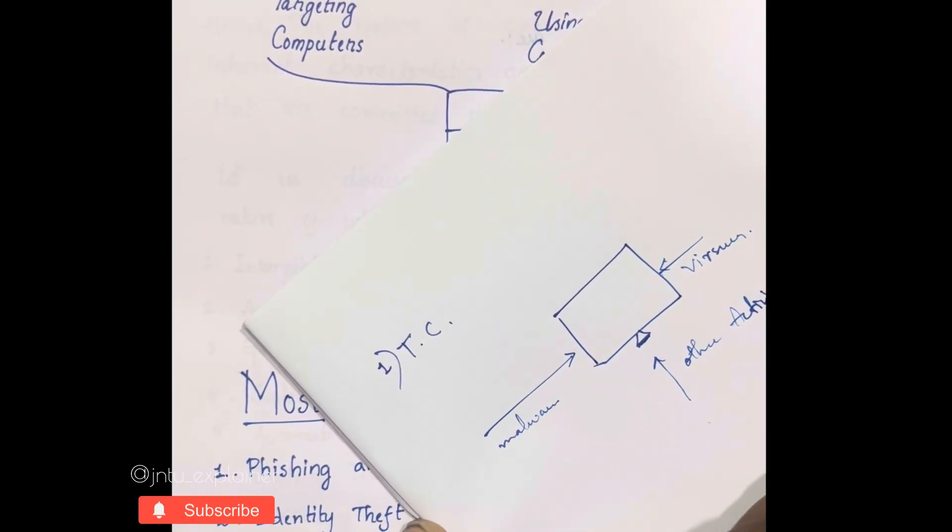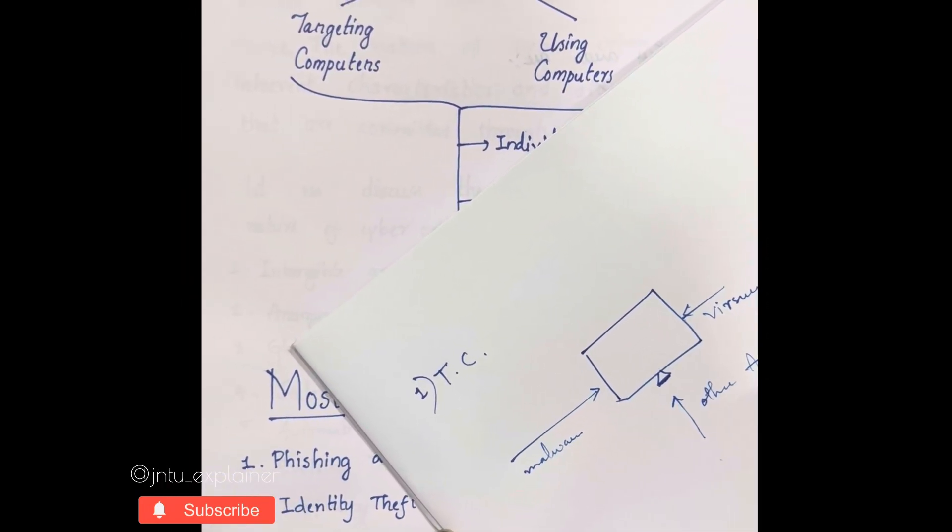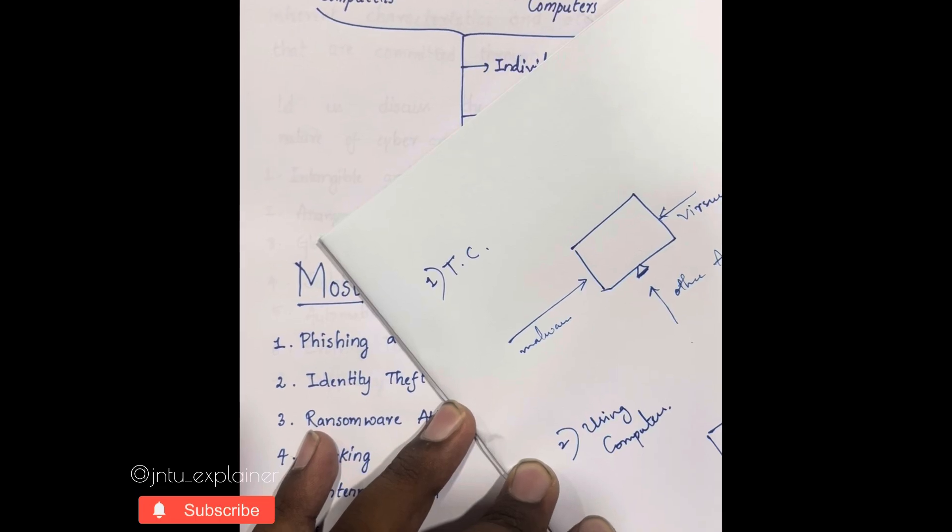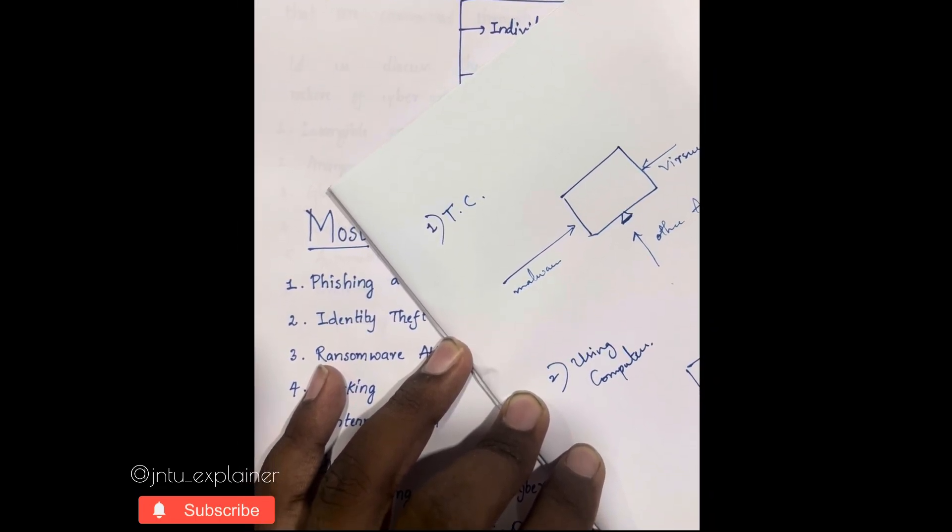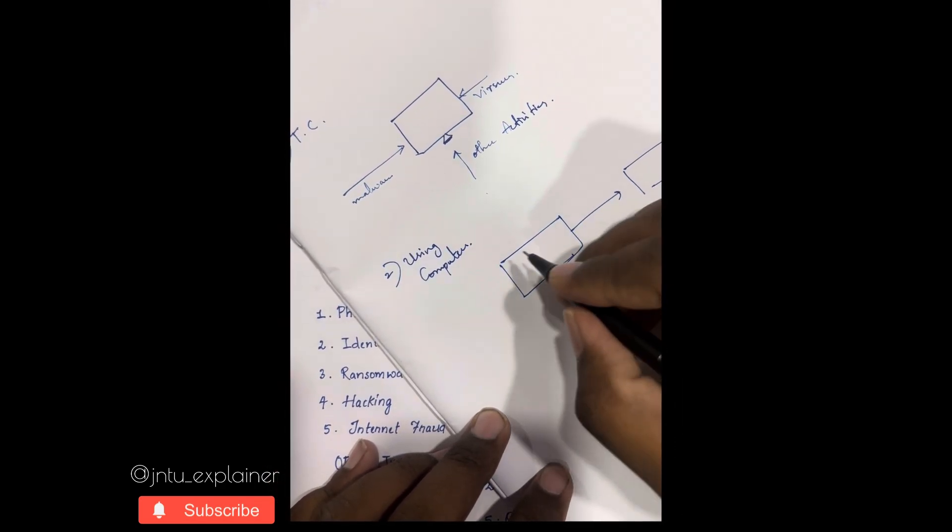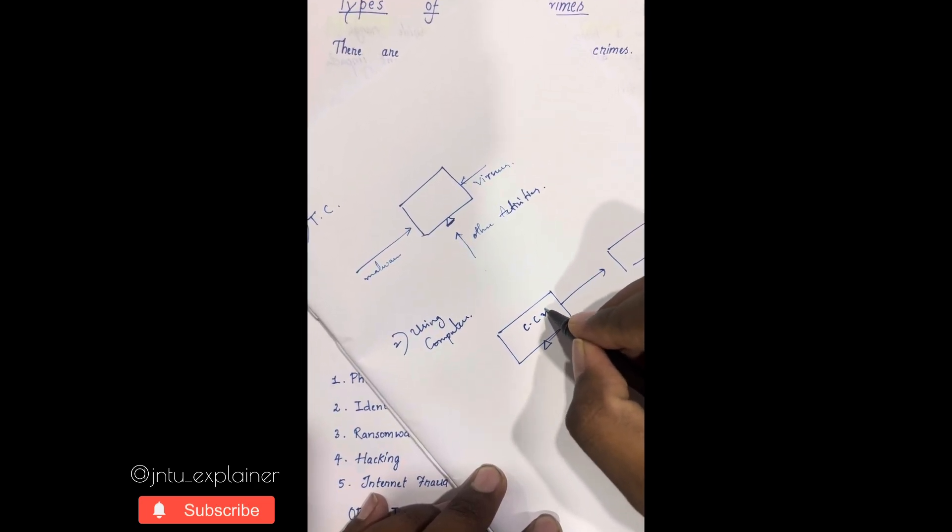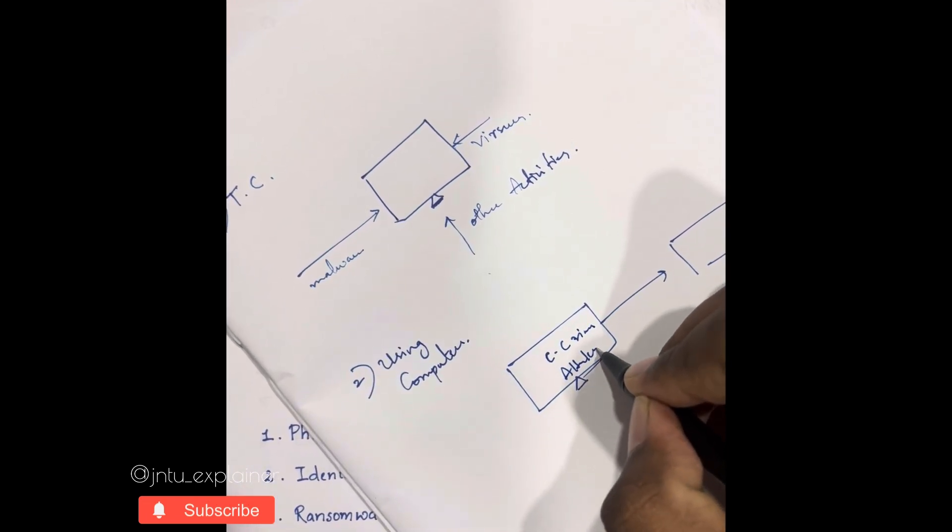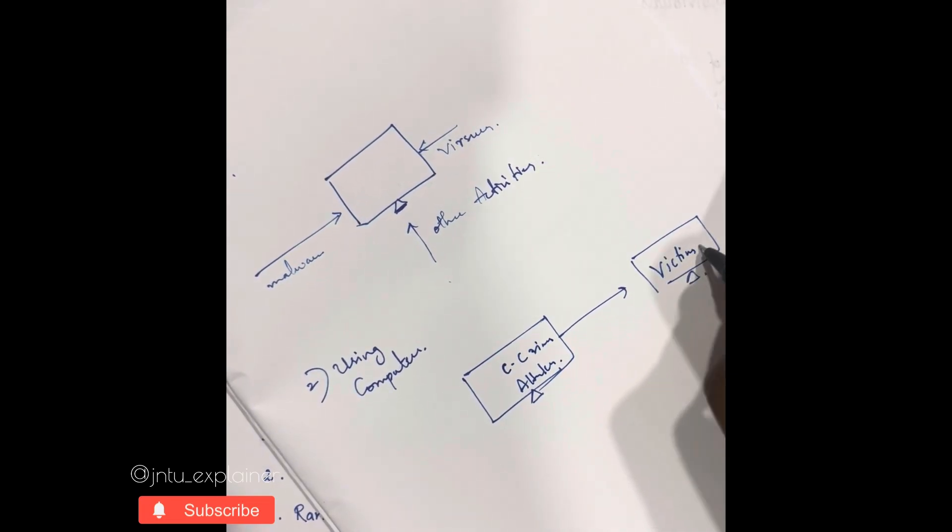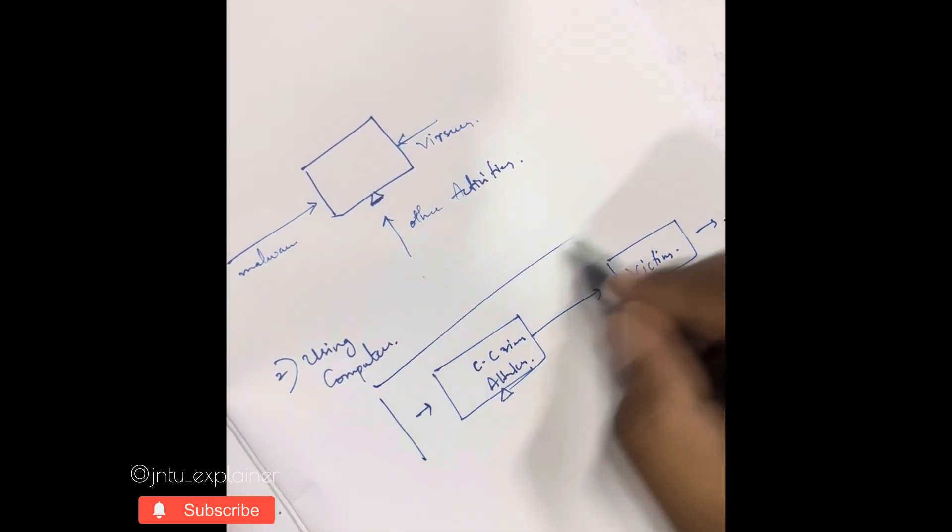The other type is using computers. Here they do crimes using a computer to a computer, in which they use their computer, the cyber crime attacker to the victim's computer. Basically, from the starting of the crime to the ending of the crime, they deal only with using a computer.